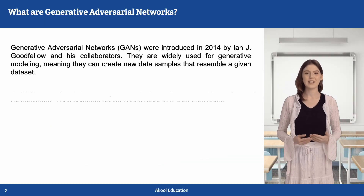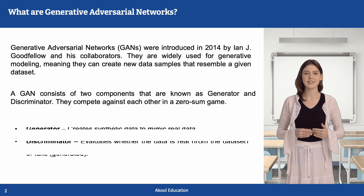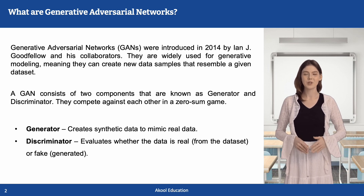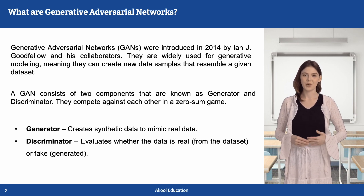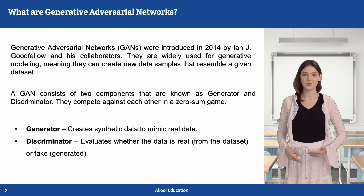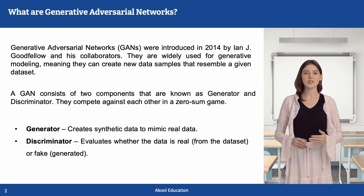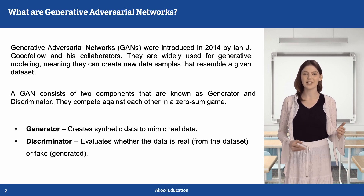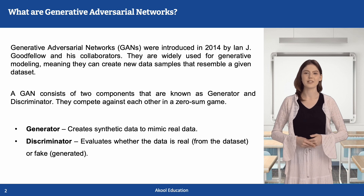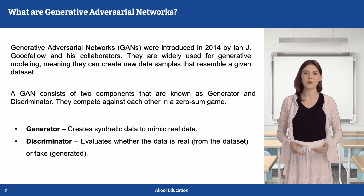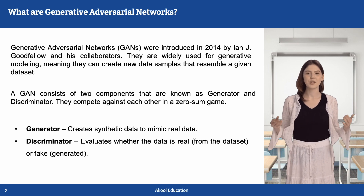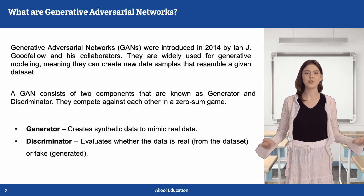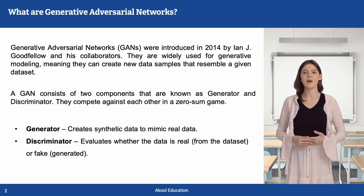GANs were introduced by Ian Goodfellow and his collaborators in 2014. They consist of two neural networks: the generator and the discriminator. The generator creates synthetic data that mimics real data, while the discriminator distinguishes between real and fake data. These networks compete in a zero-sum game, where one network's success comes at the other's expense, enabling the generator to gradually improve and produce highly realistic outputs.